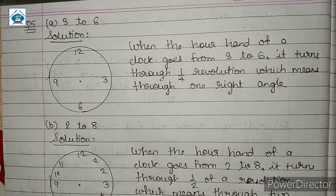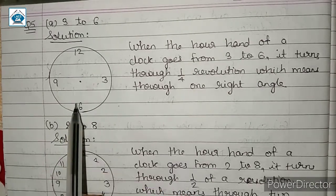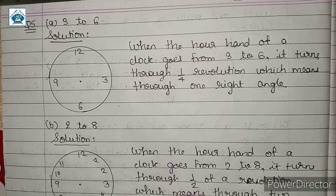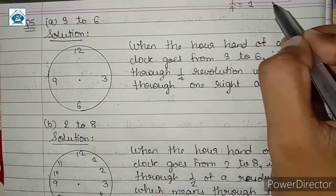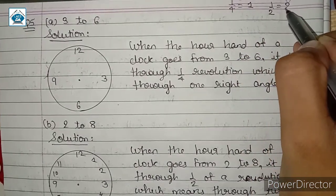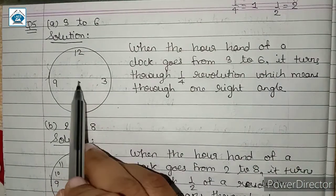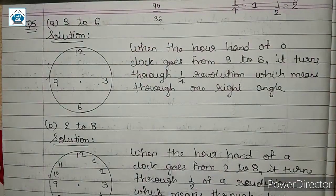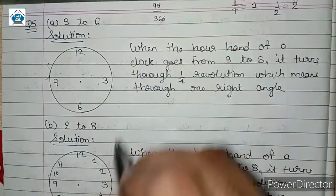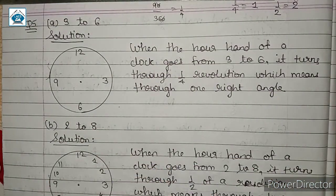Just like I explained in question number 5, we have to find the number of right angles. In 360 degrees around the clock we have 1, 2, 3 and 4 right angles. So here we have to remember: 1/4th revolution means 1 right angle, which is 90 degrees. If we have 1/2 part of the revolution that means 2 right angles. So 1/4th revolution is 90 out of 360 degrees.